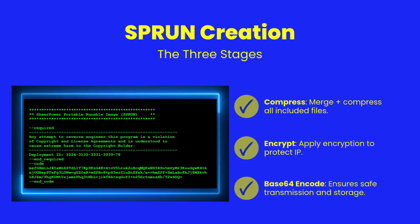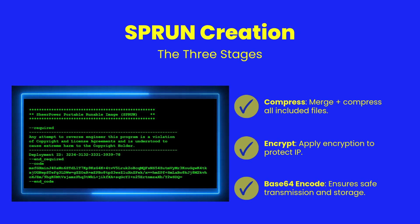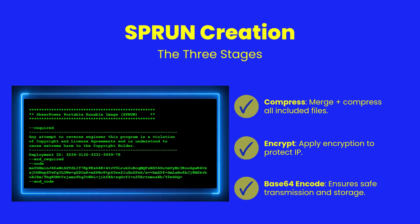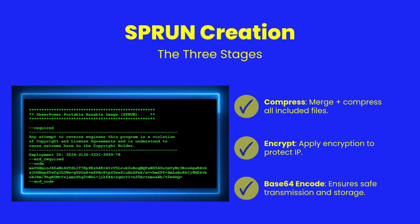An .sp-run file is created in three deliberate stages. First, all %include files are merged and compressed into one block. Then, this block is encrypted for full security. Finally, it's encoded in base64 to ensure reliable transmission across systems. The result is a single, tamper-resistant executable container.